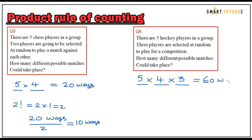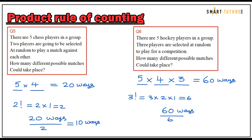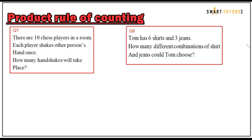There may be duplicates — we need to find them. It is a three-player system, so use three factorial: three times two times one equals six. Divide 60 ways by six; the answer is ten different ways. That is the answer for question number six.